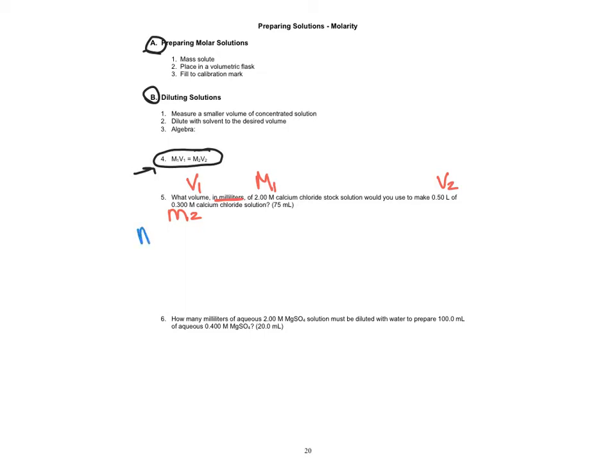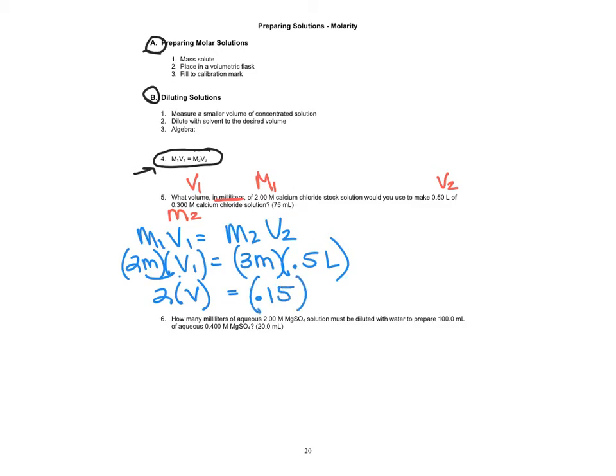Okay, so now at this point we have all four variables. So when we write the equation M1V1 equals M2V2, now we just plug those numbers in because we've already labeled them. So our M1 was two molar and V1 is our question, that's the variable we're solving for, equals M2 is three molar and volume two is 0.5 liters. Okay, so these two get multiplied over here, so it's 2V equals 0.15 on this side.